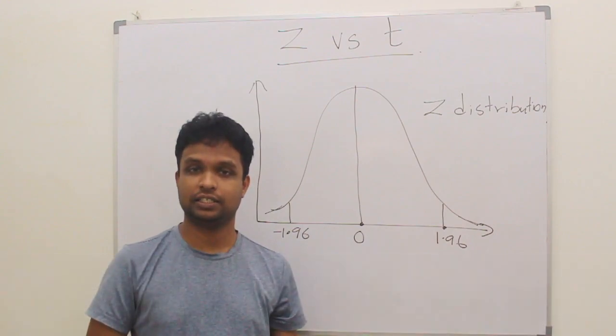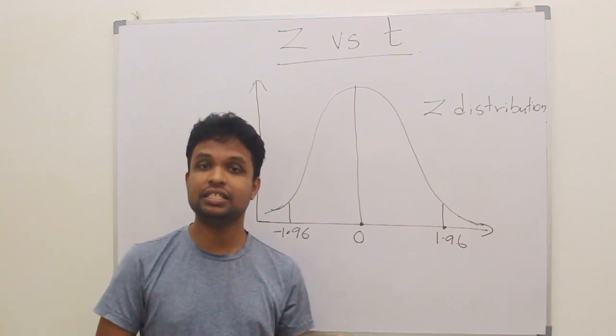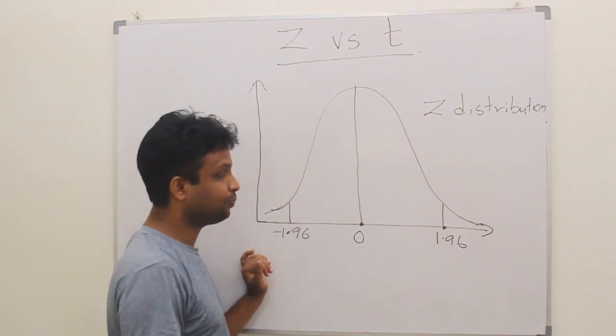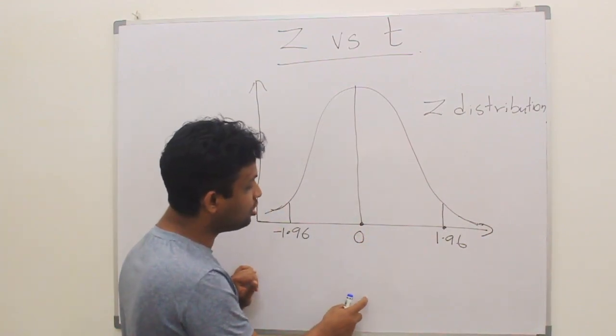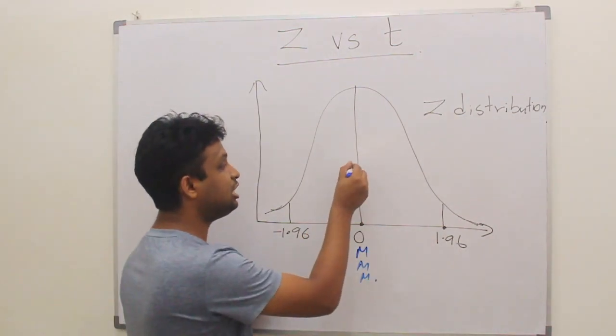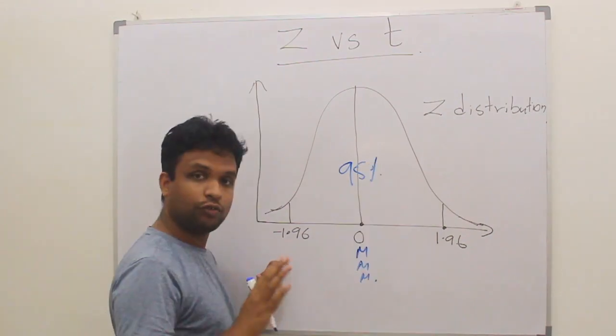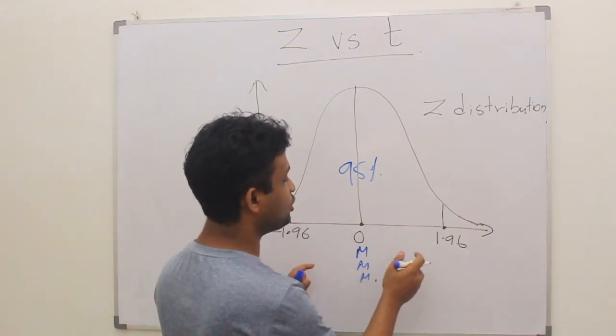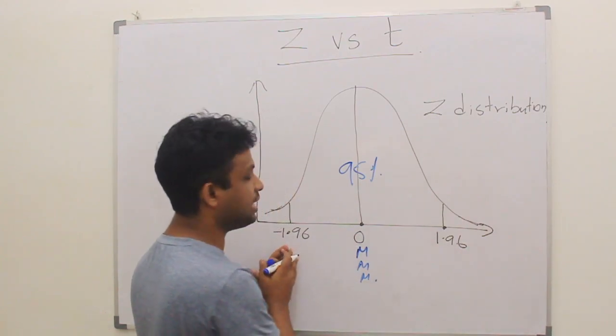In one of the previous lectures, I discussed the Z-distribution, where it is a bell-shaped curve. The mean is zero, and mean, median, and mode all three lie at the center. 95% of the individuals are between mean plus or minus 1.96 standard deviations.